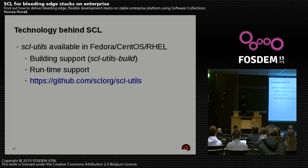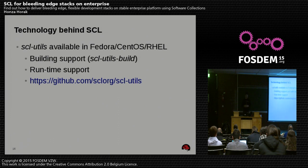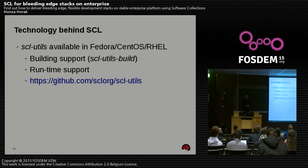So once we solve those three conflicts, how do we actually do it on the packaging side and on the runtime side? There is one package that does all the magic — it's called scl-utils, and it's divided into a runtime part and a build-time part called scl-utils-build sub-package. News from the upstream: scl-utils has moved to GitHub, so it's much easier to contribute and see changes. Join the upstream if you want.